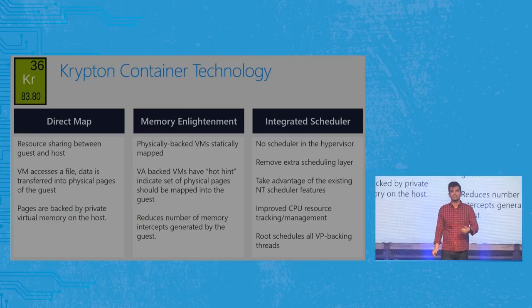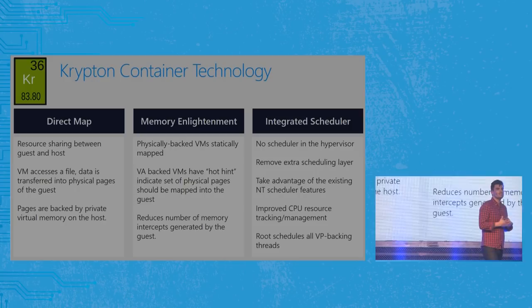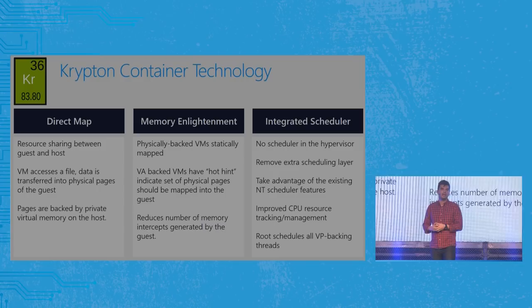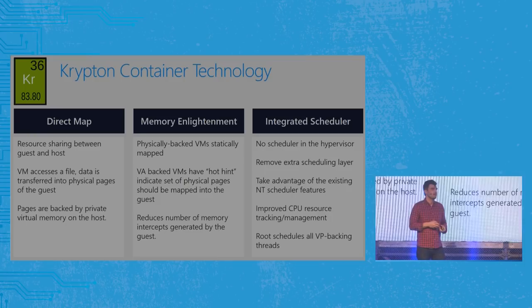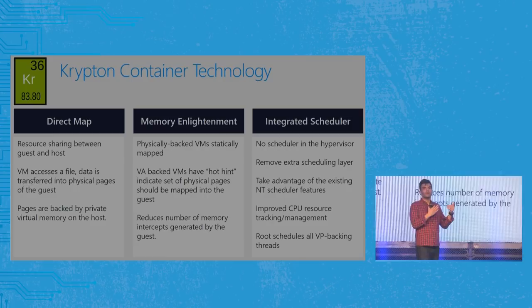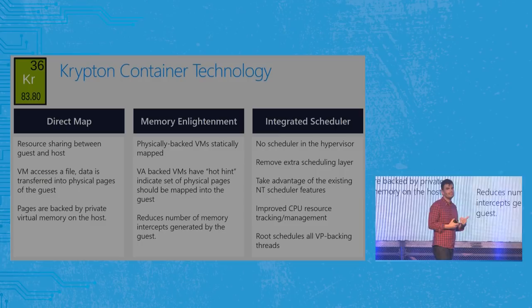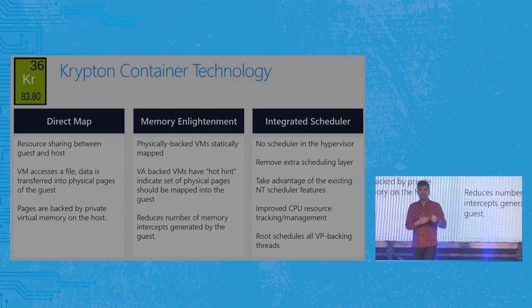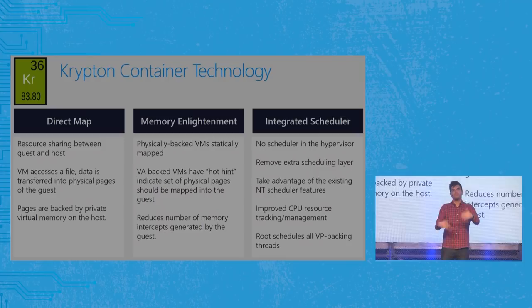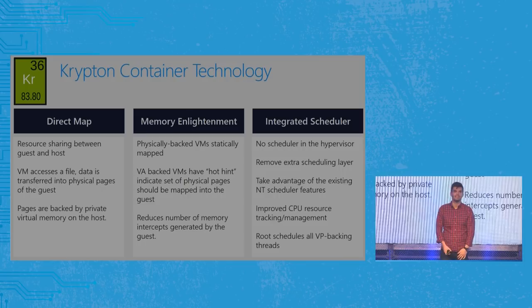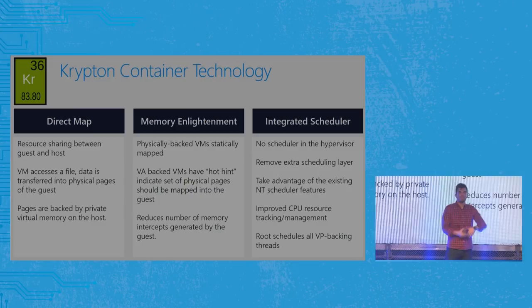Krypton is the technology backing our application virtualization security technology WDAG — Windows Defender Application Guard. It has a technology called Direct Map that is really cool: when we spin up a Windows container it doesn't need its own VHD. You can run a container with only a 16-megabyte VHD. The way it does that is by sharing binaries with the parent OS — when we boot up a container, we ask the memory manager for that image and if it's already loaded on the host, it's instantly physically mapped into the guest. Essentially our VHD is just 16 megabytes of registry entries because the binaries are shared with the host.